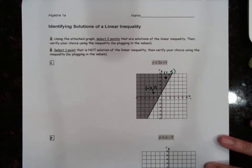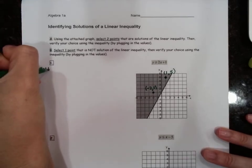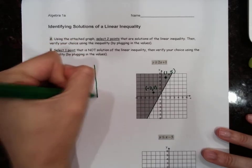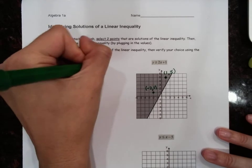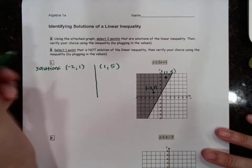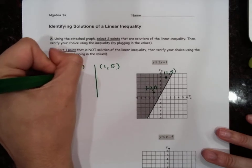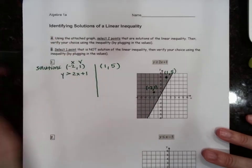And so we're going to prove that these are solutions. So (-2, 1) and (1, 5), by plugging them into y is greater than 2x plus 1. So we have our x and we have our y.